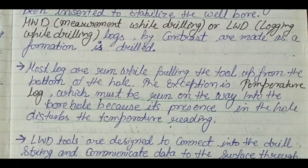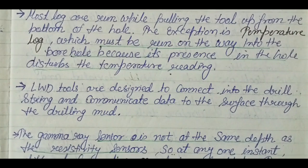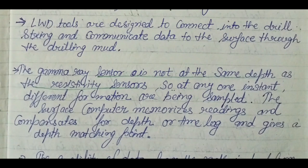Logging While Drilling tools are designed to connect into the drill string and communicate data to the surface through drilling mud. Sometimes the gamma ray sensor is not at the same depth as the resistivity sensor, because a single tool can have multiple measurement units at different positions. At any one instant, different formations are being sampled simultaneously. The surface computer memorizes readings and compensates for depth or time offset to give a depth-matched output. The gamma ray log is also useful for depth matching.